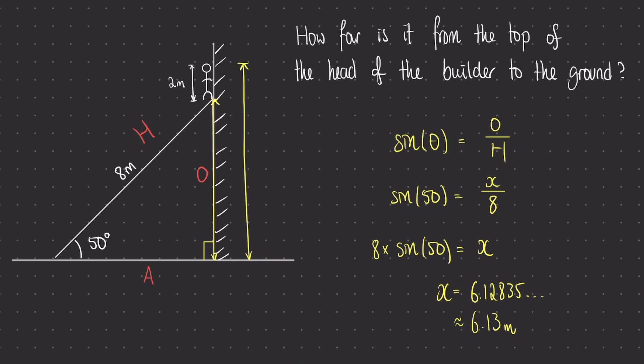The question is asking us how far from the top of the head of the builder, so we need to add his height onto this value here. It's going to be 2 plus 6.13, which is 8.13 meters off the ground. Although the ladder is 8 meters long, the builder's head is just above 8 meters above the ground.